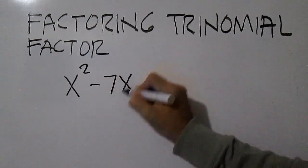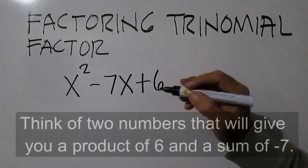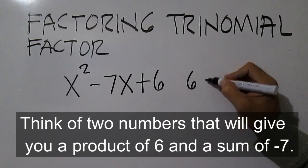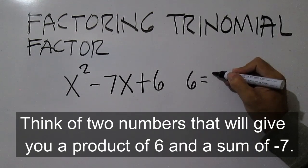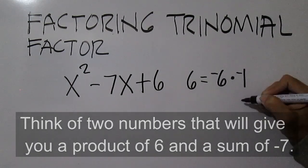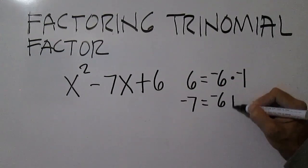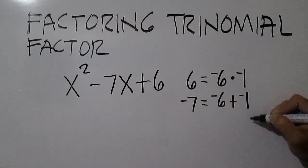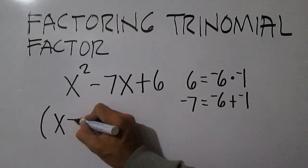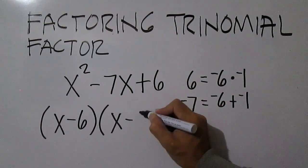Factor x squared minus 7x plus 6. Think of two numbers that will give you a product of 6 and a sum of negative 7. 6 equals negative 6 times negative 1. Negative 7 is equal to negative 6 plus negative 1. The factors are x minus 6 and x minus 1.